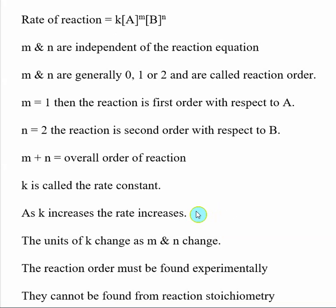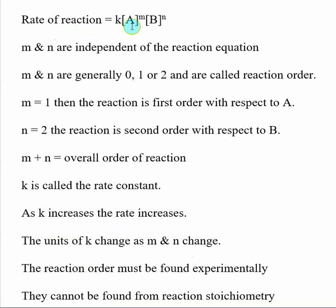We will also get into what aspects of the chemical reaction affect K. One other important thing to consider is that the units on K change with respect to M and N — so K changes as the overall reaction order changes. We know rates of reaction need to be in molar per second and concentrations need to be in molarity. So depending on what M and N are, K needs to have corresponding units that will cause these molarities to turn into molar per second.